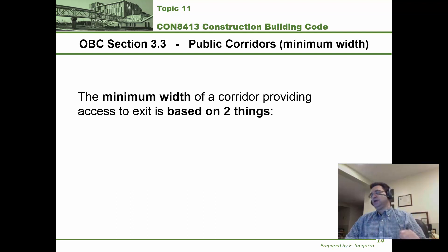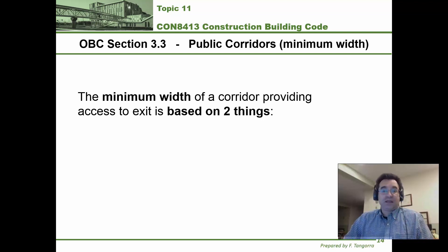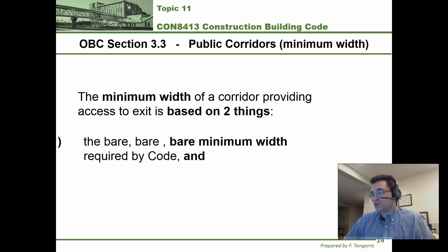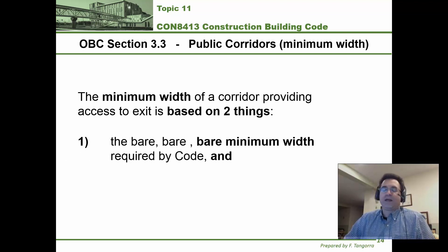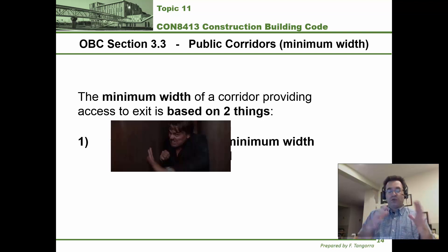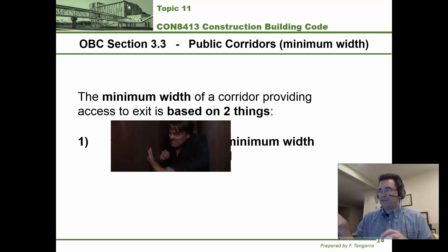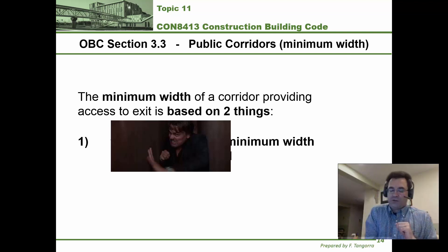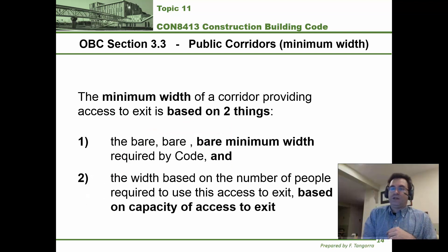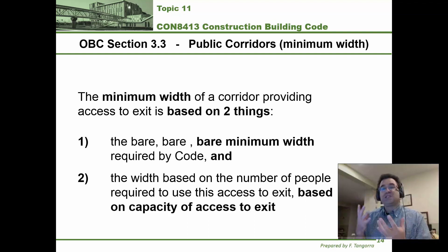Specifically, the building code in section 3.3 requires two things as guidelines for the minimum width of a corridor. First, the bare minimum width — basically the minimum required for a single person to make it through a corridor, illustrated as the opposite of the protagonist getting stuck because the walls were so close together. That's the first criteria. The second criteria deals with the occupant load.